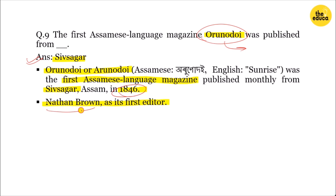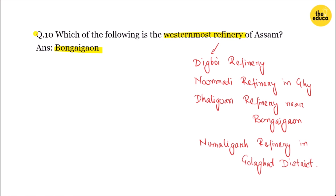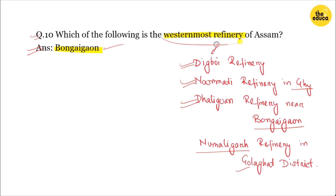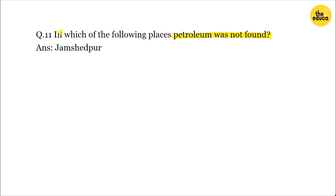The next question is about the westernmost refinery of Assam. Another question asks: in which of the following places was petroleum not found?